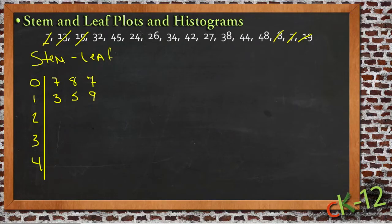And then for 20s, we have 24, 26, 27. So we just put a 4, a 6, and a 7 in the 2 row. And then we have 32, 34, 38. So we have 2, 4, and 8.